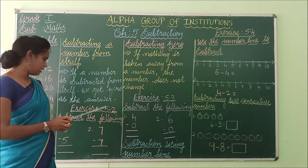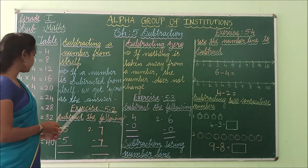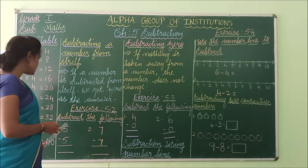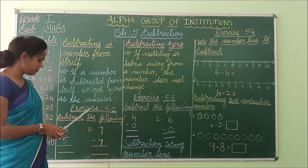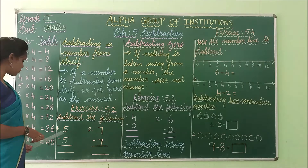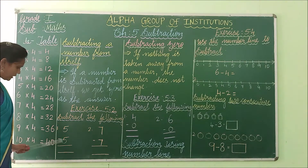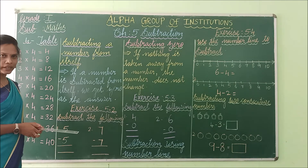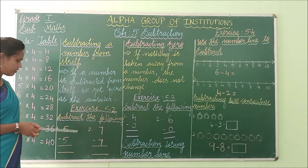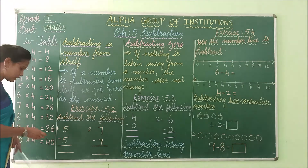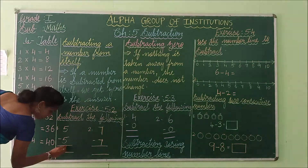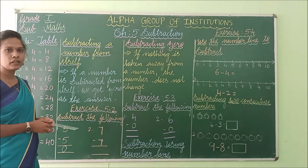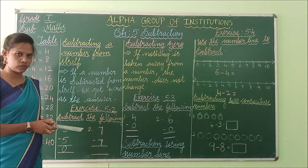Shall we see the example? Exercise 5.2 — subtract the following. See the first problem: 5 minus 5. 5 minus 5 is 0. So, if you subtract the same number from itself, you will get 0.